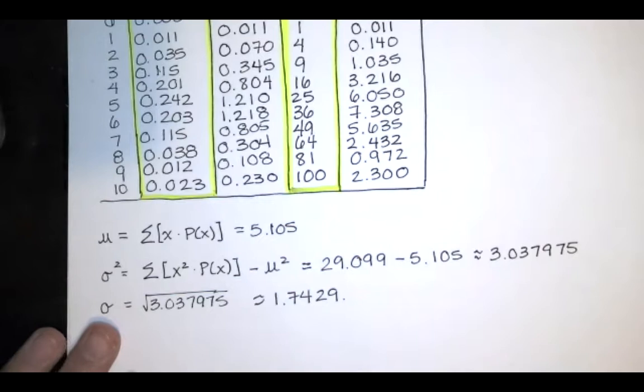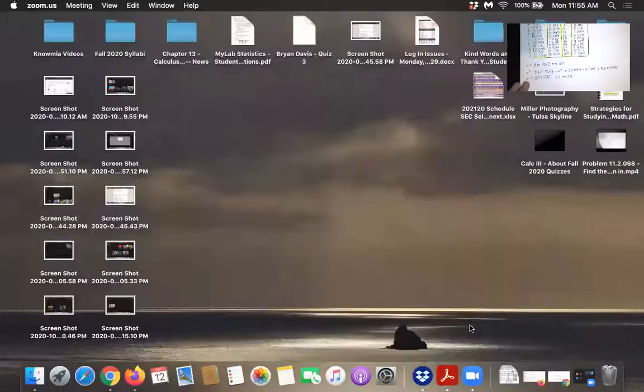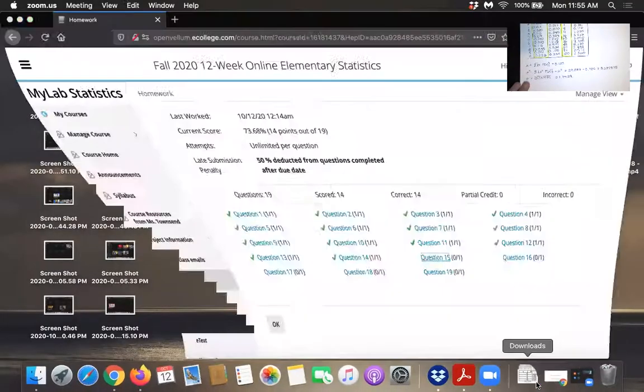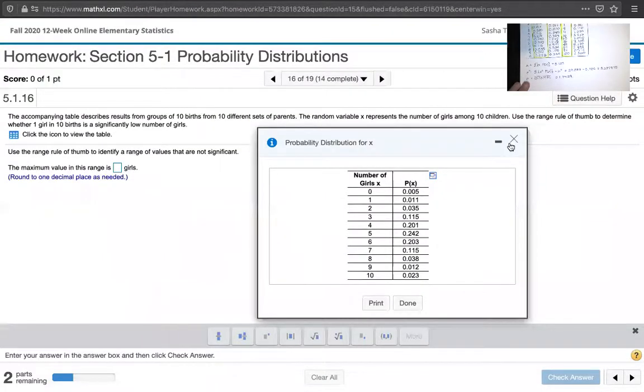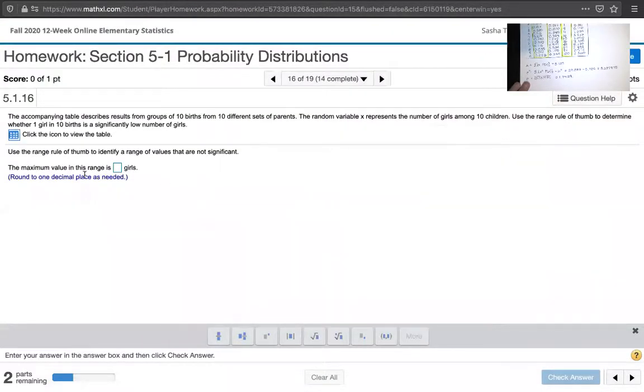So now let's go back to that screen that shows us the homework problem. So we're right here. And it says find the maximum value in the range of values that are not significant. So the range of values that are not significant span from the mean minus two standard deviations to the mean plus two standard deviations. So we want that maximum value and the minimum value. But first, I wanted to come back here to this screen to see what the fine print said. The fine print says to round to one decimal place.